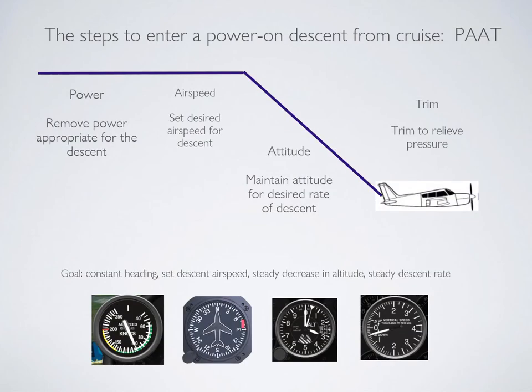For a power-on descent at 70 knots, follow PAT: carb heat on, power back to about 1500 RPM, pitch for about 70 knots, and trim to hold it — you're now in a power-on descent. If you need to descend at a faster rate, remove power. If you want to change your airspeed, control your pitch.